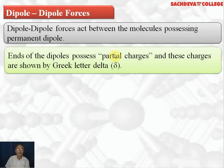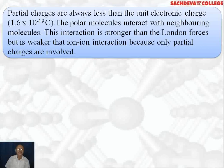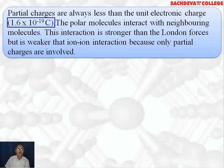The ends of the dipole possess partial charges, and these partial charges we represent by delta. Delta positive represents positive charge and delta negative represents negative charge. Delta means there is a small charge — partial charges are always less than unit electronic charge. The unit electronic charge is the charge on the electron, which is 1.6 × 10⁻¹⁹ coulombs. These partial charges are less than this charge.